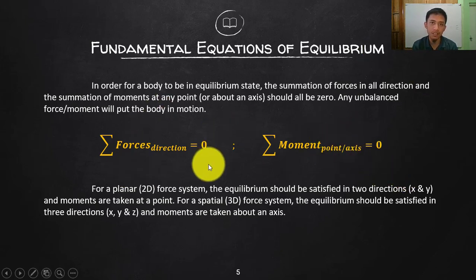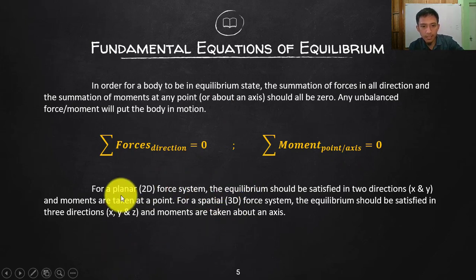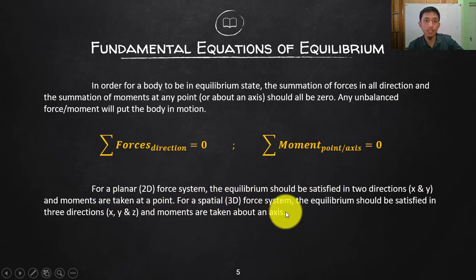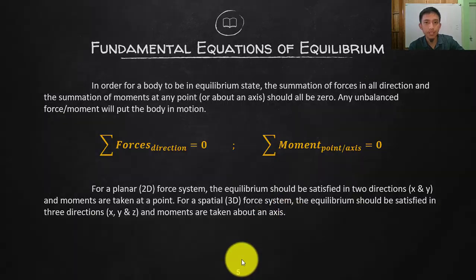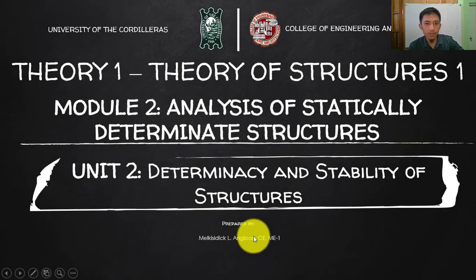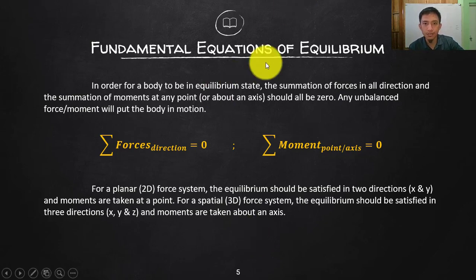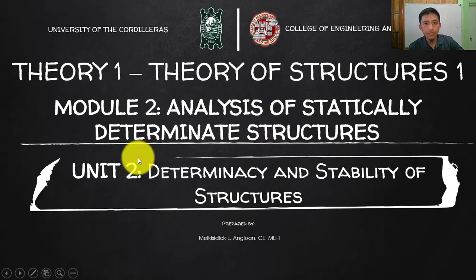Any unbalanced force or moment will create motion within the body. To summarize: summation of forces in any direction must equal zero — in 2D that is x and y, in 3D that adds z. Summation of moments must also equal zero — in 2D about a point, in 3D about an axis. This is Unit 1: recalling force systems and fundamental equilibrium equations needed for structural analysis.